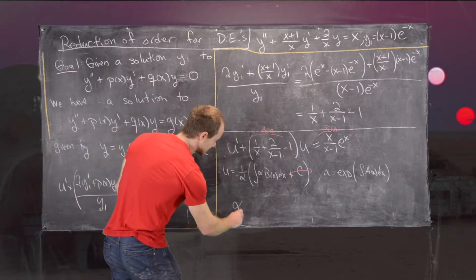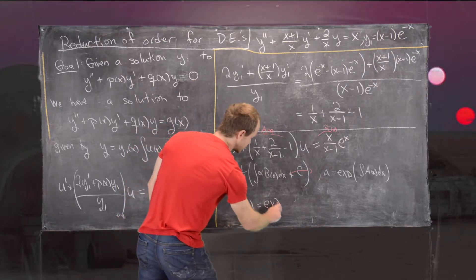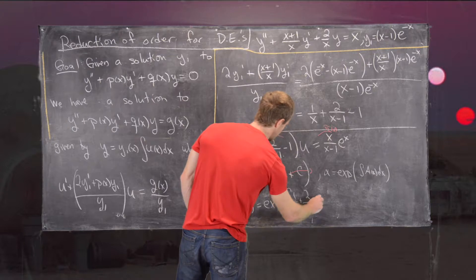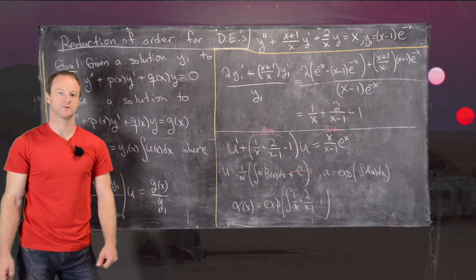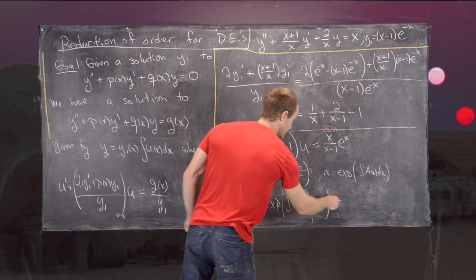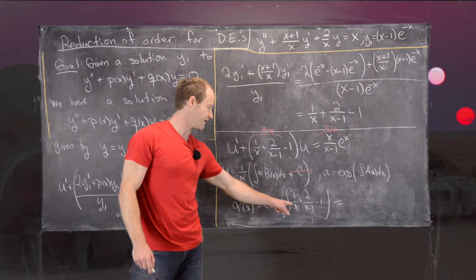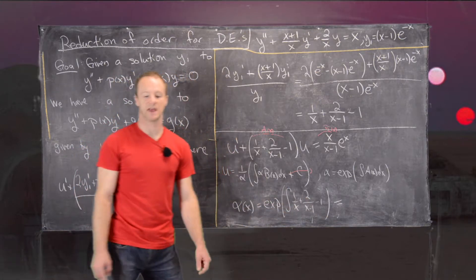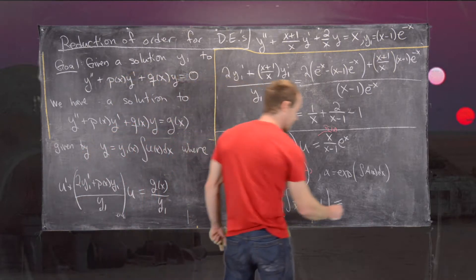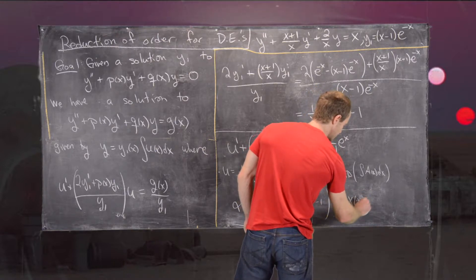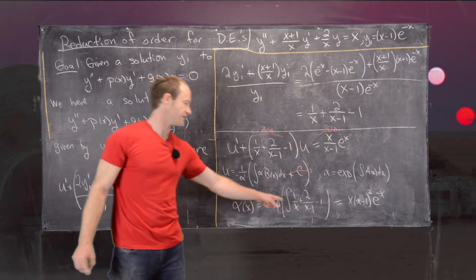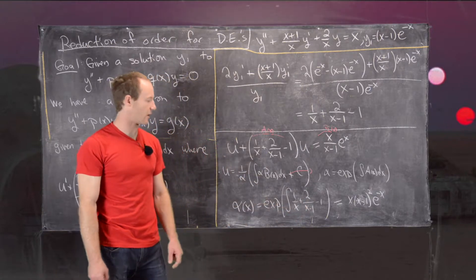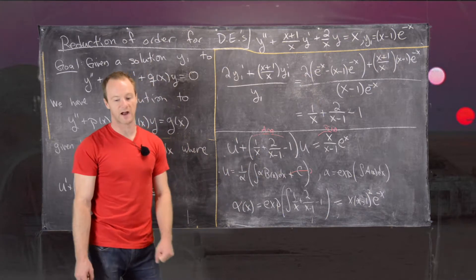Our α(x) equals the exponential of the antiderivative of [1/x plus 2/(x minus 1) minus 1] dx. The 1/x term gives natural log of x, the 2/(x minus 1) term gives twice the natural log of (x minus 1), and the minus 1 gives minus x. Exponentiating all of that gives us x times (x minus 1) squared times e to the minus x.